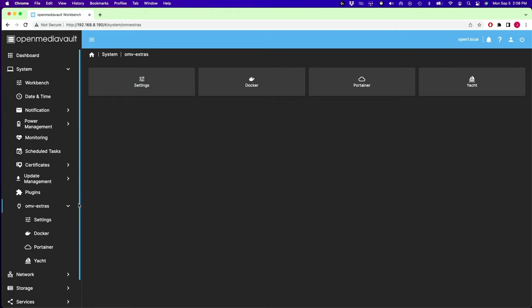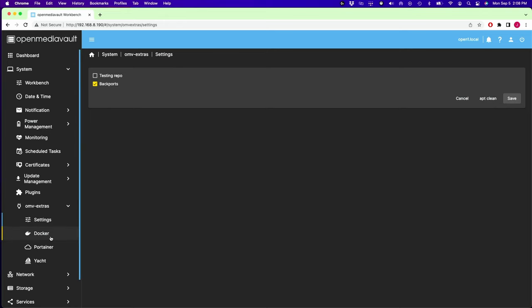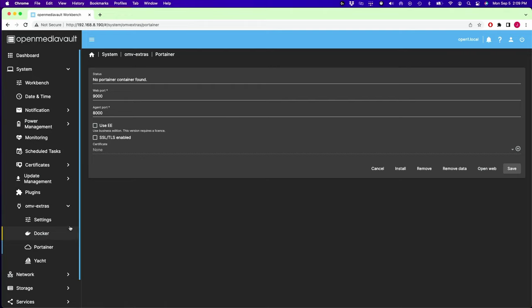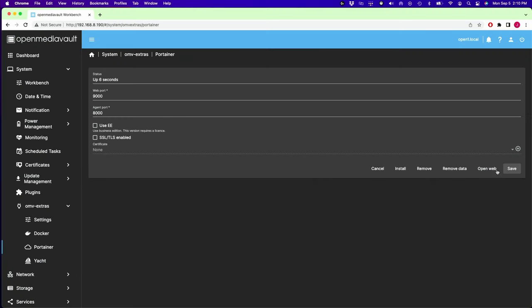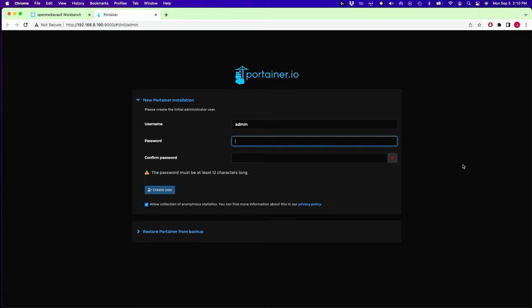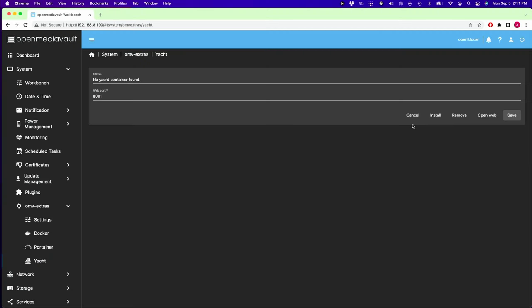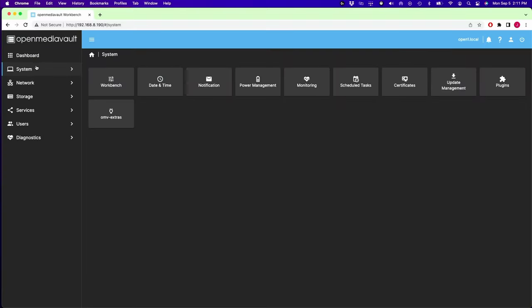Next we have the OMV extras. And it has a few things in it. So we have settings. Here it lets us pick which repo it's using. I would just stick with that. Docker installs Docker. Portainer installs Portainer. And we're going to do that. We'll click install. And so when Portainer installs, it actually installs Docker too. So you don't have to do both. Once that's loaded, you can click open web. That will take you to the Portainer login screen. And then finally on the screen, we have yacht. So yacht is a program that helps you install dockers. It is easy to install dockers with it. But it does take a little setup, which we're not going to do today. I'll do that in another video. So finally, we're out of the system tab.